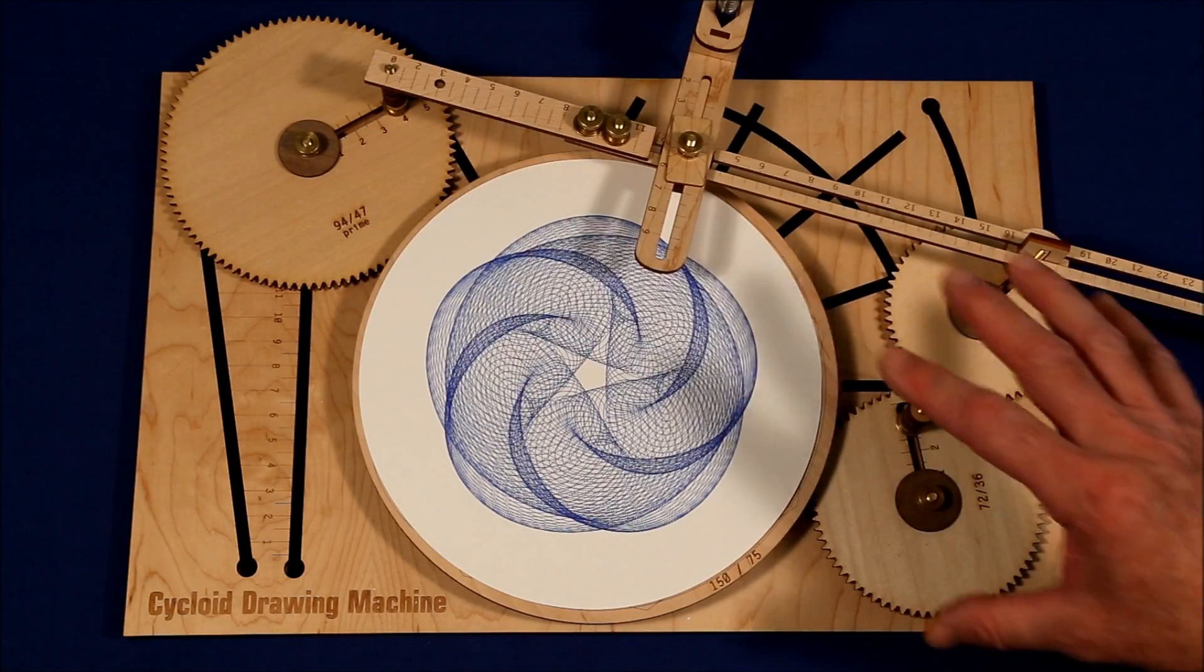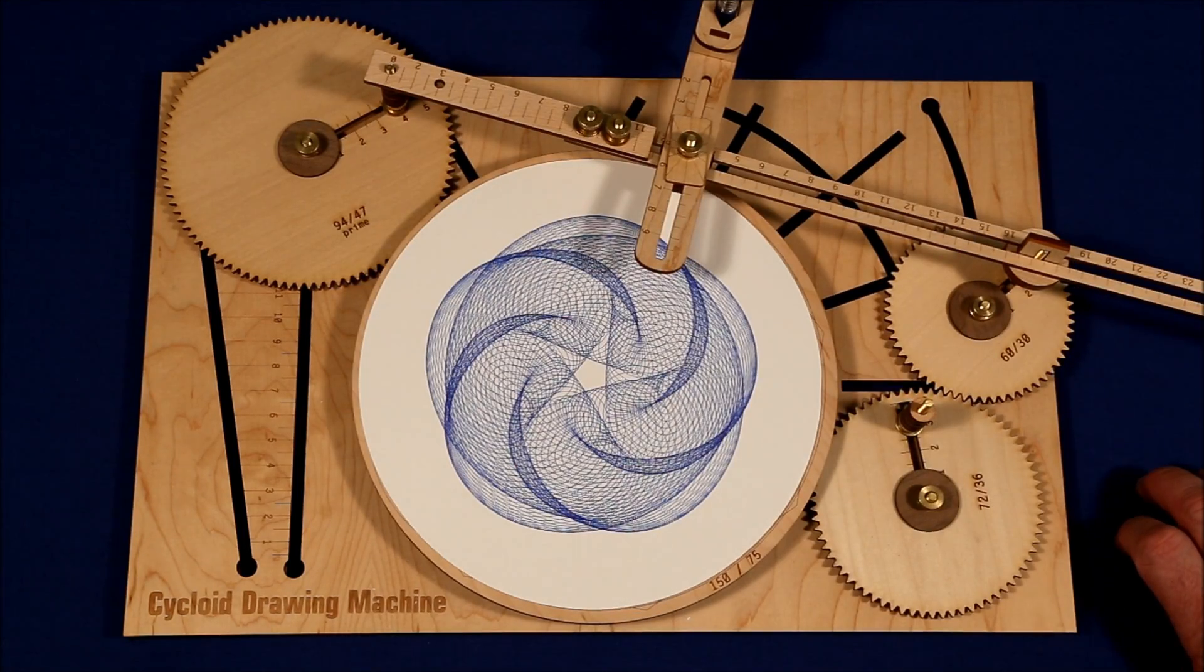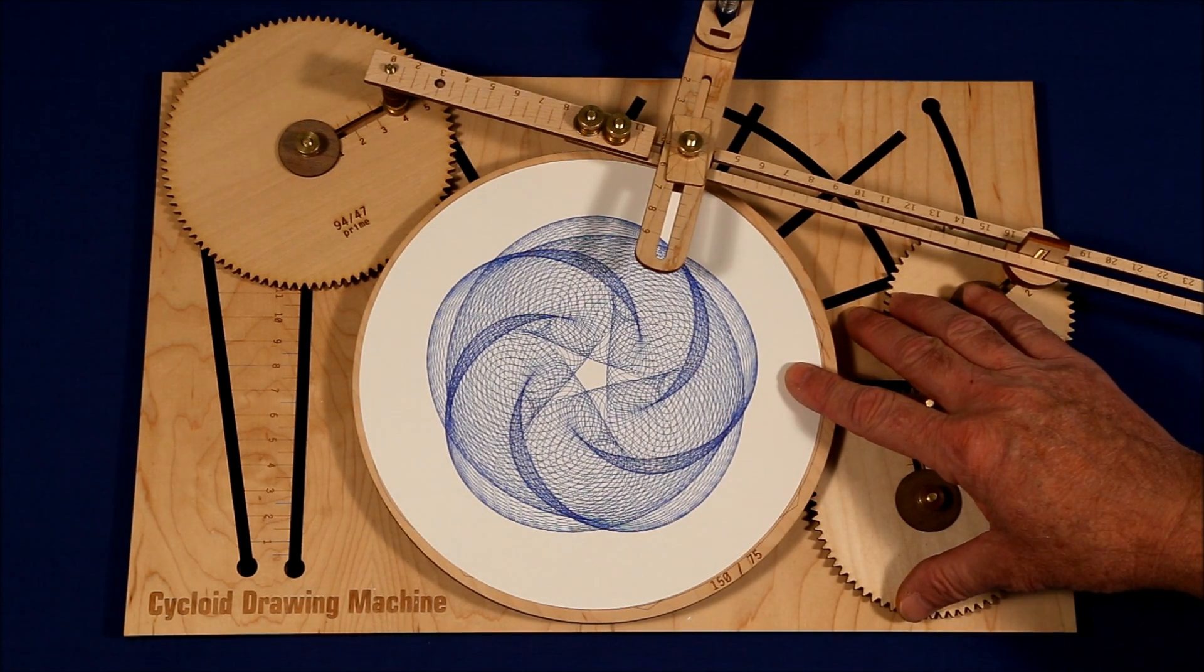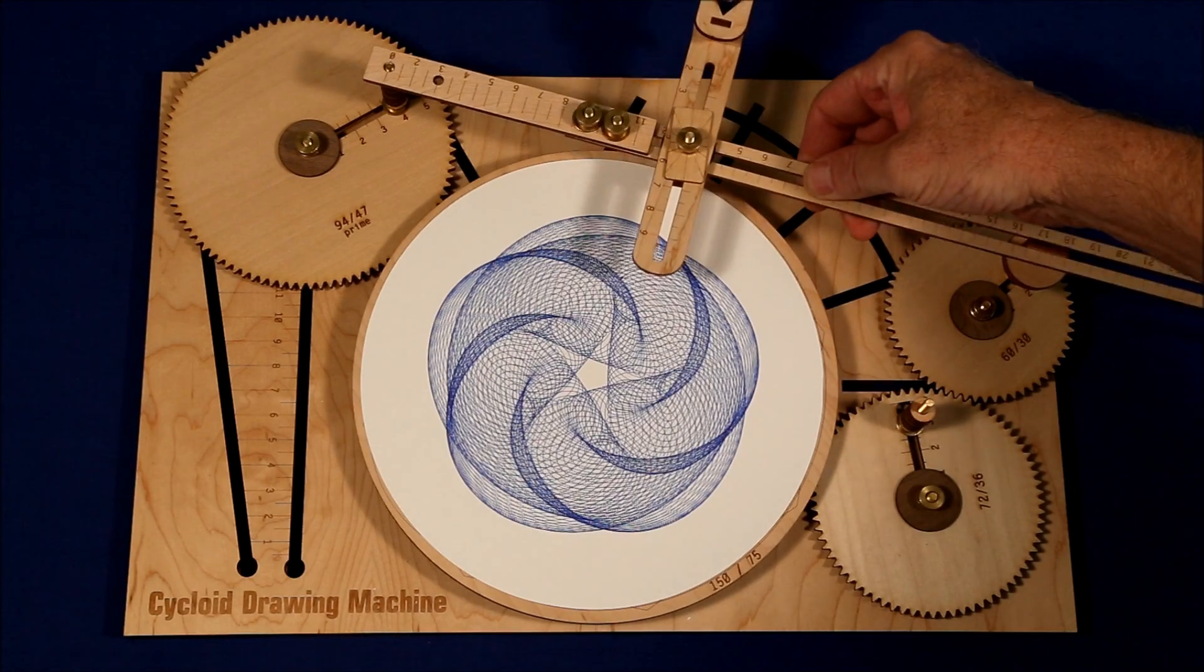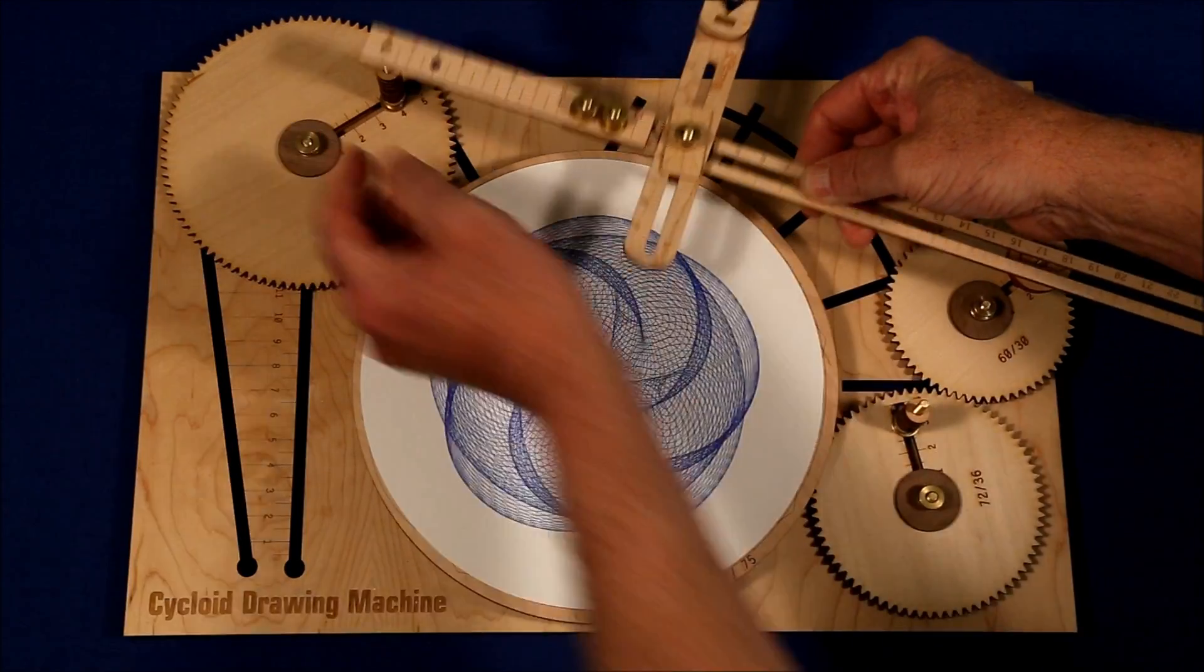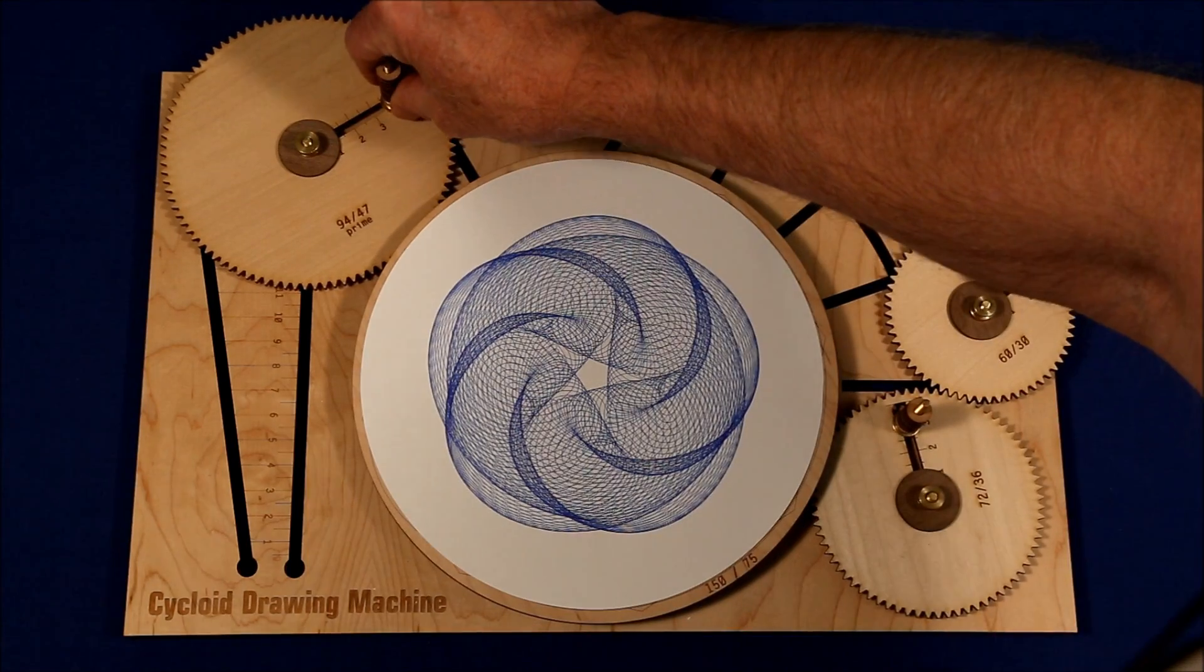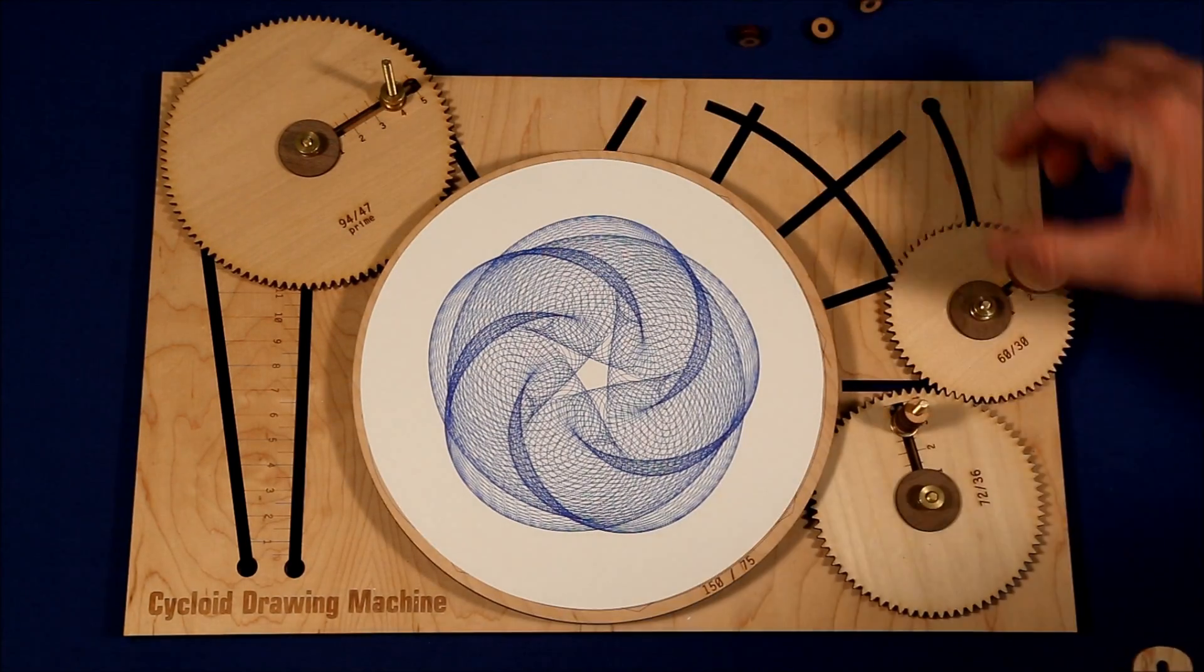So then you get to go back all over and change all of the variables again. And this is just one simple setup. The more complicated setups could take weeks to fully appreciate the full range of the designs that they can produce. This flexibility is the cycloid drawing machine's greatest asset, but it also creates its greatest challenge.